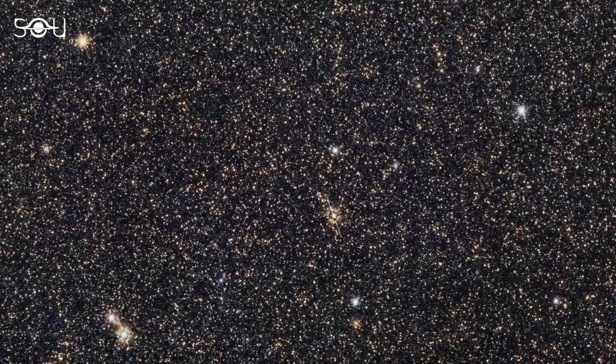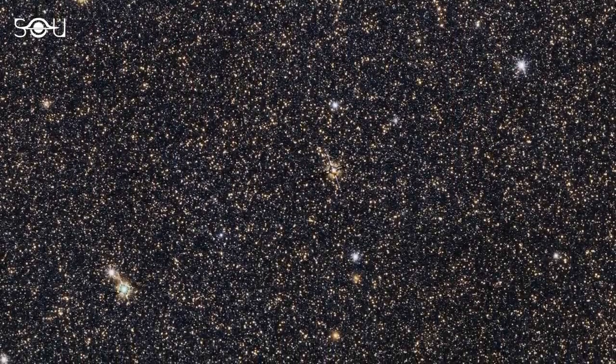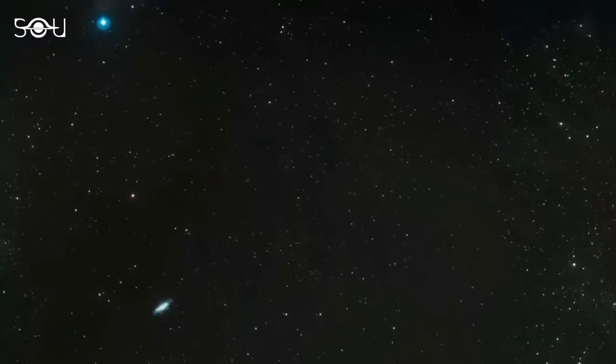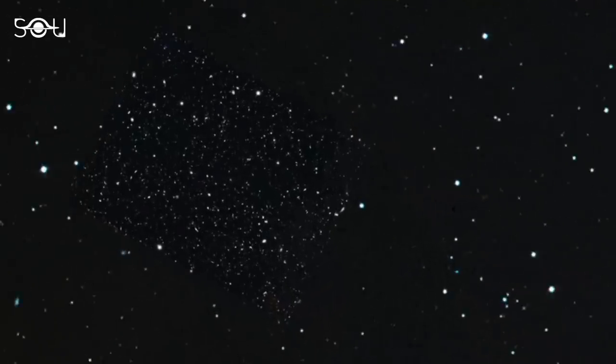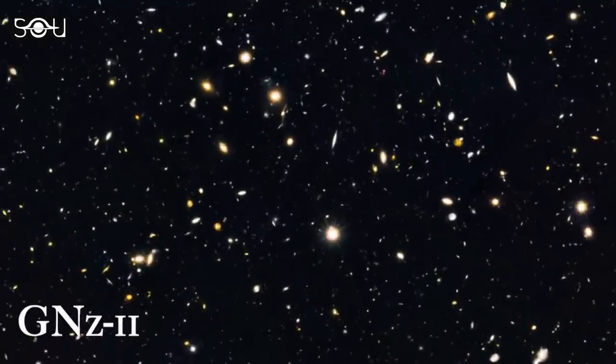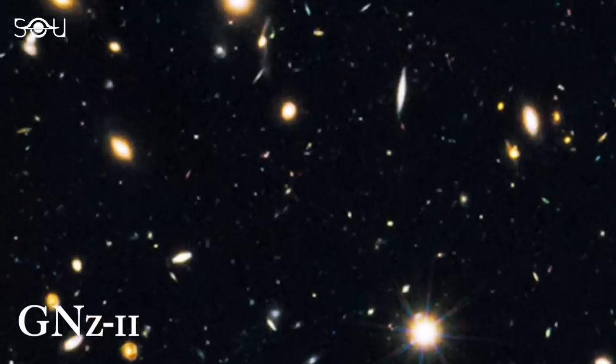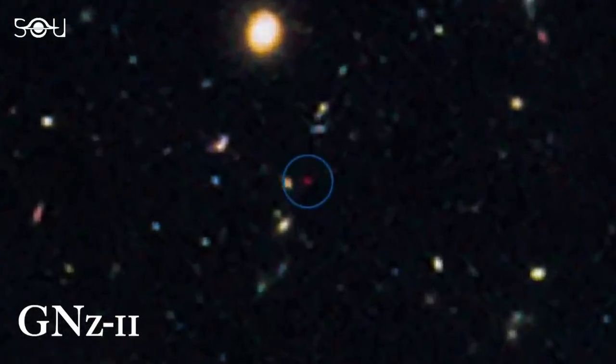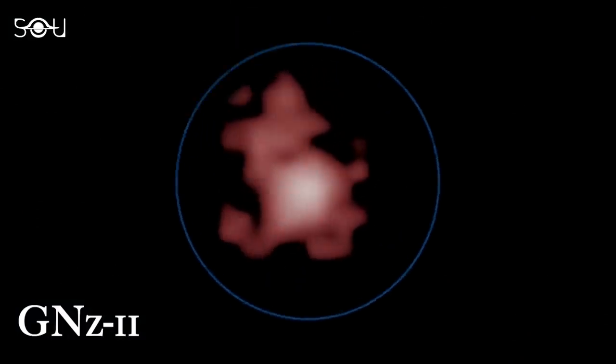Before Webb, astronomers had found just one galaxy in the Z greater than 11 era, or the first 400 million years of the universe. It was a galaxy named GN-z11 at a redshift of 11.1 and was discovered by the Hubble Space Telescope in 2015.